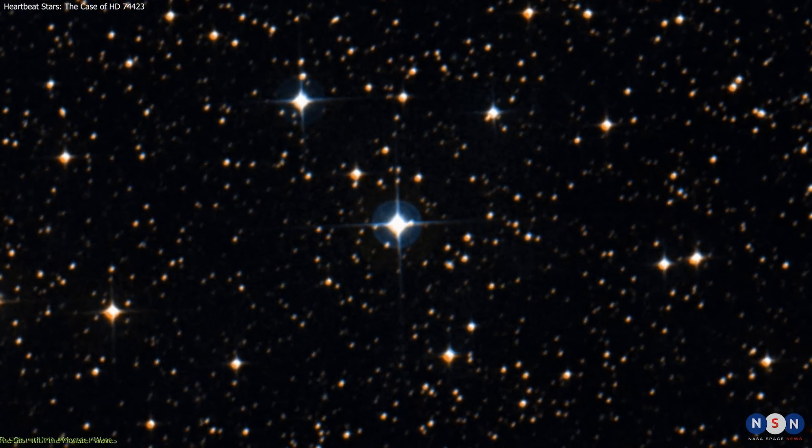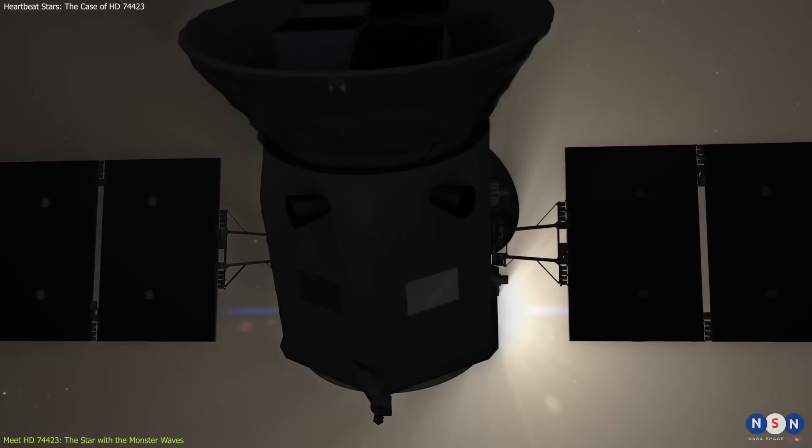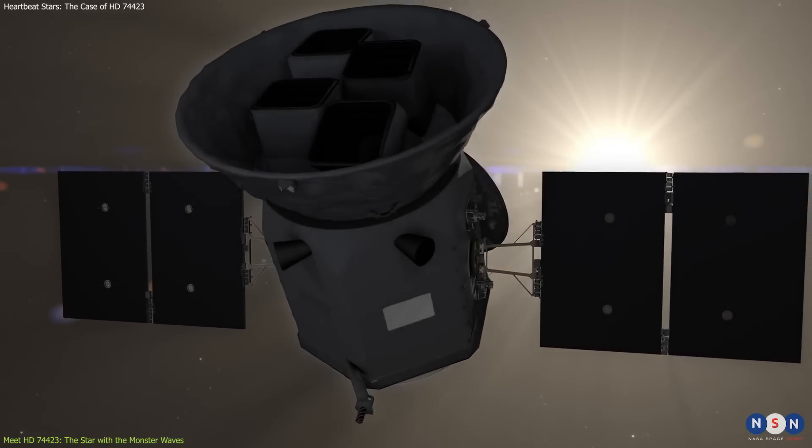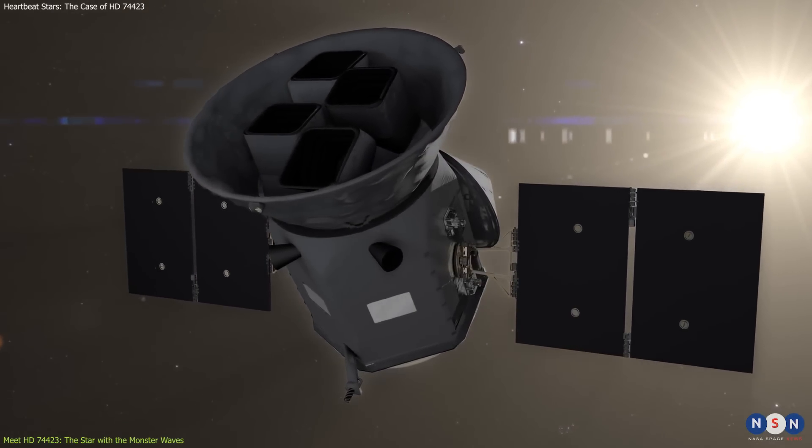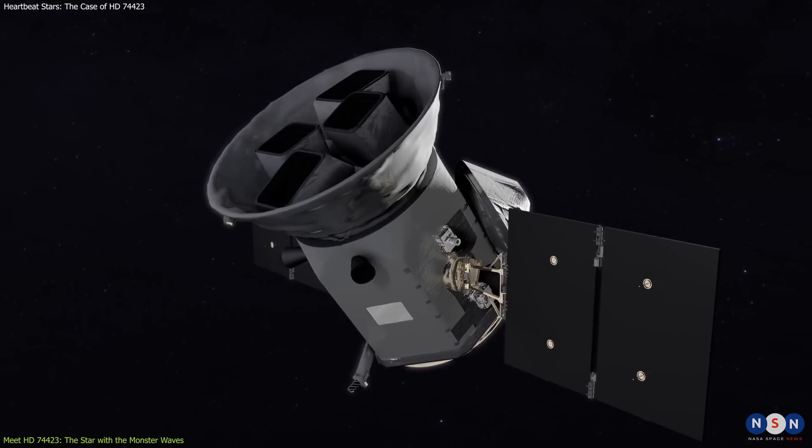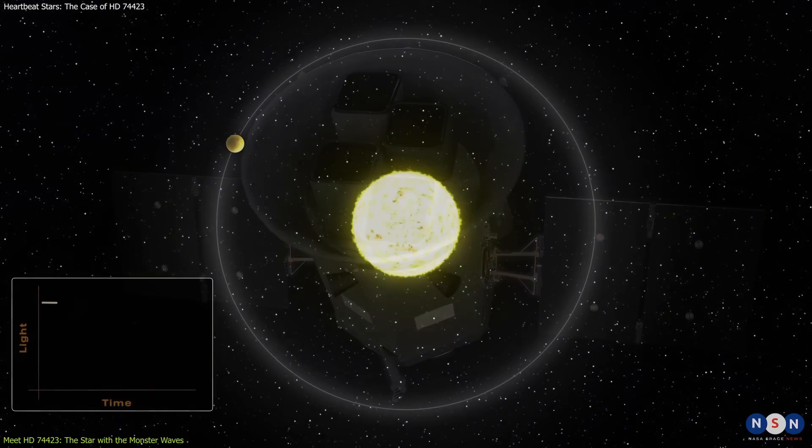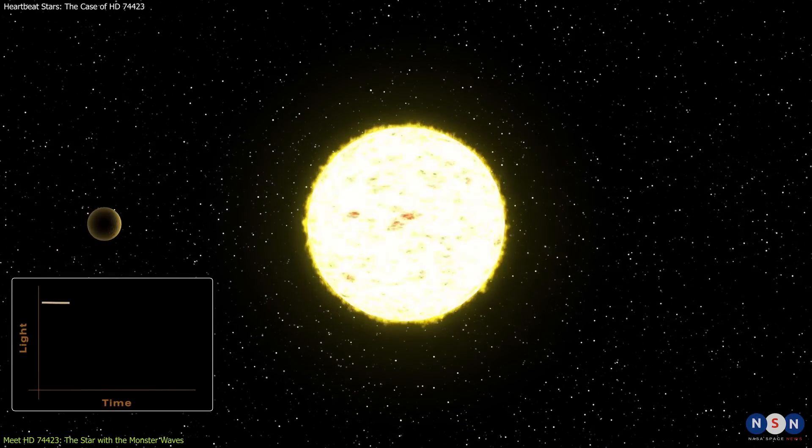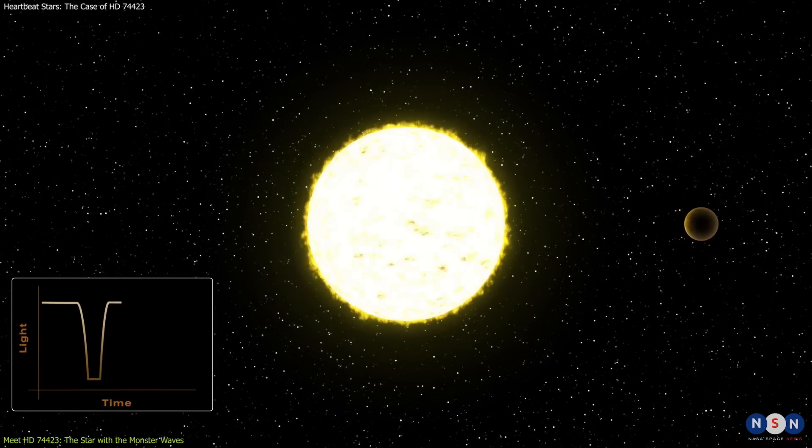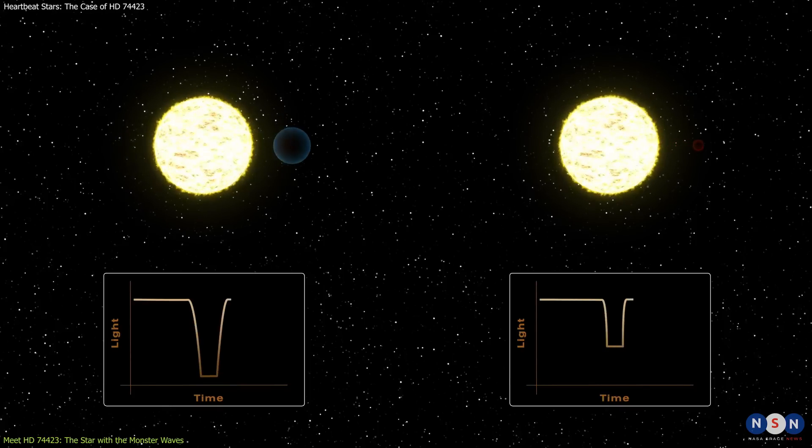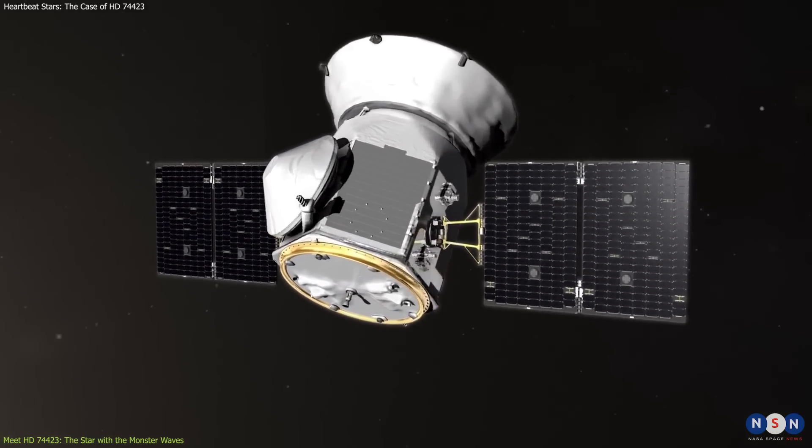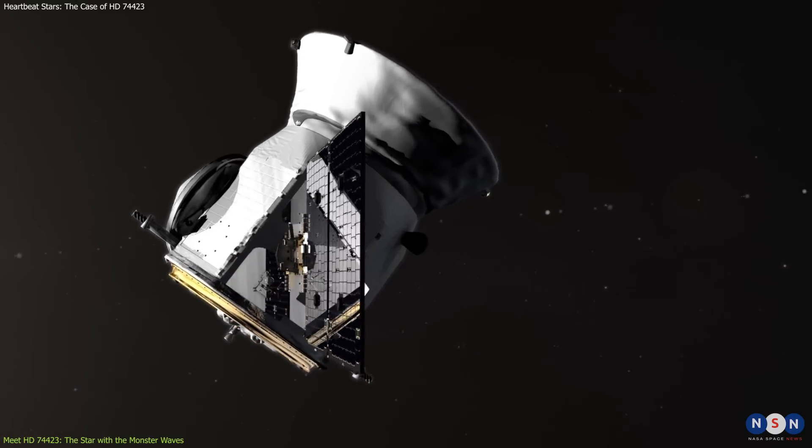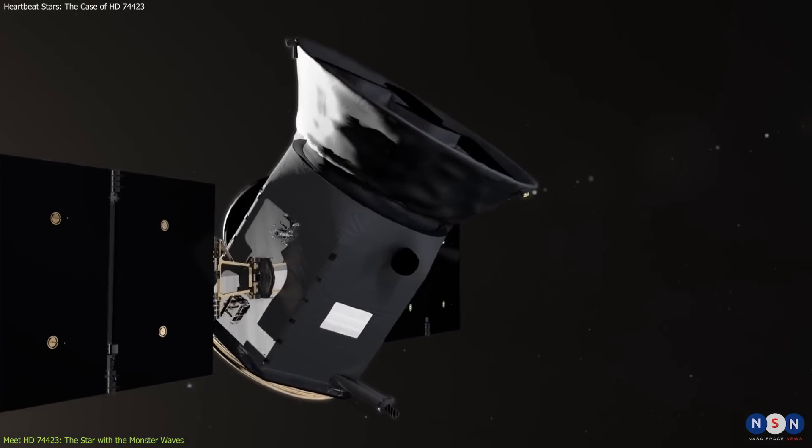HD 74423 is a new heartbeat star system that was discovered by citizen scientists using data from NASA's TESS mission. TESS is a space telescope that scans the sky for planets that pass in front of their host stars, blocking some of their light. This is called a transit, and it can tell us a lot about the size and orbit of the planet. But TESS can also detect other types of variations in starlight, such as those caused by heartbeat stars.